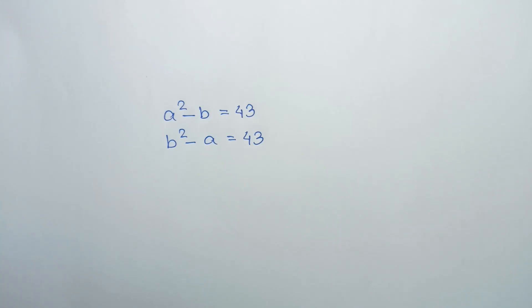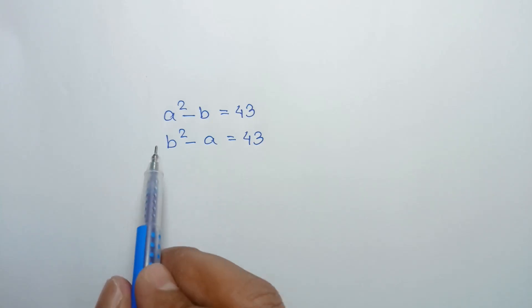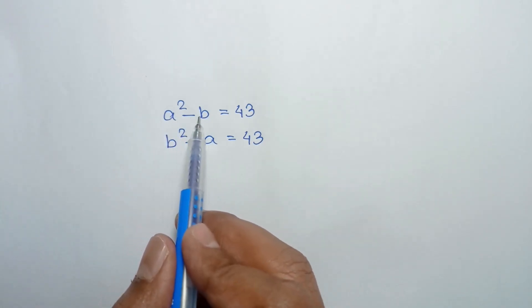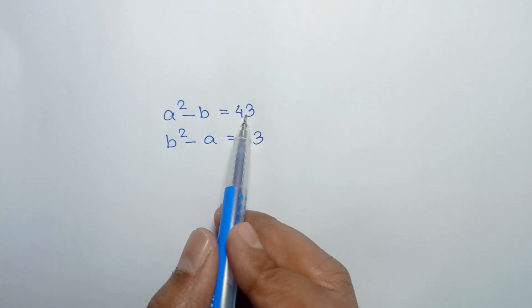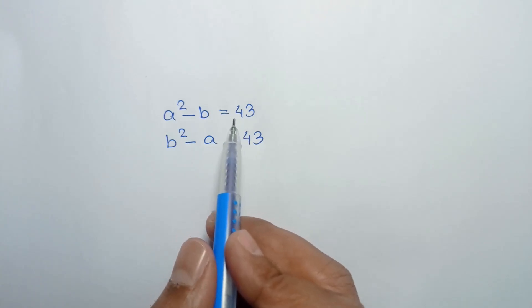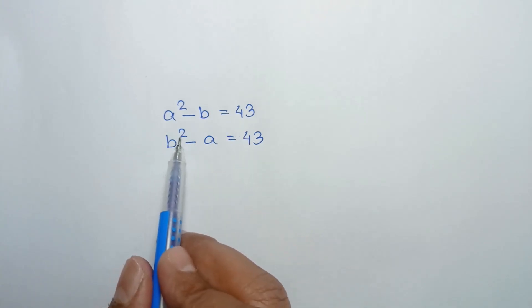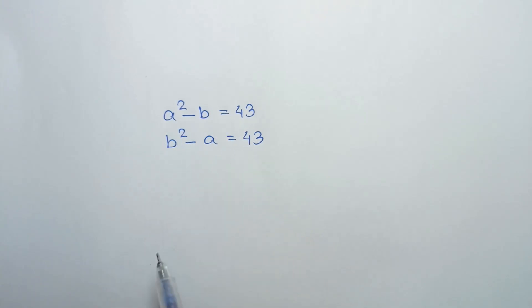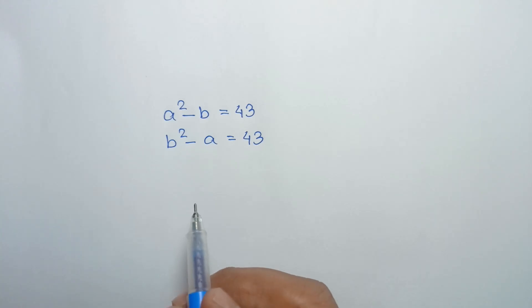Hi everyone. In this video I am going to show how to find the value of a and b, where a squared minus b is equal to 43 and b squared minus a is equal to 43.